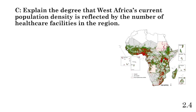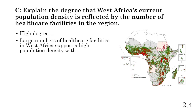Part C: explain the degree to which West Africa's current population density is reflected by the high number of healthcare facilities in the region. We need to give a degree of relevancy — how true is the statement? The statement is very true because we have a lot of hospitals in areas with high population densities. So we're going to say there is a high degree here. You must give a degree; if you don't, you forfeit the points, and that one point could be the determining factor between a two and a three, or even a four and a five.